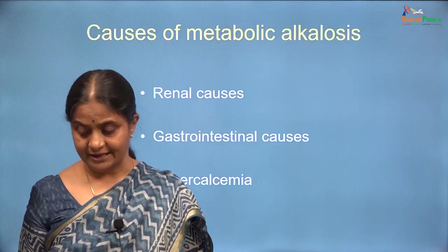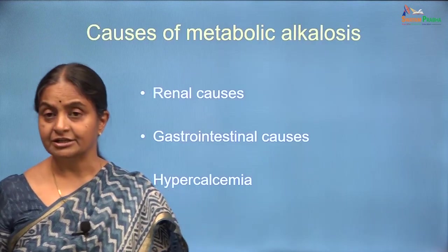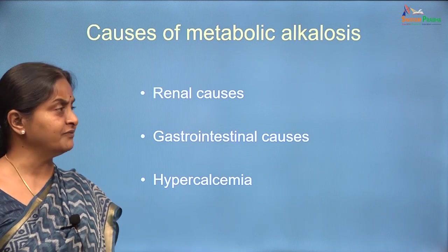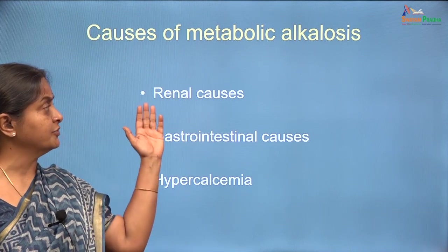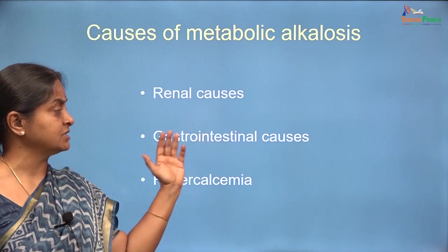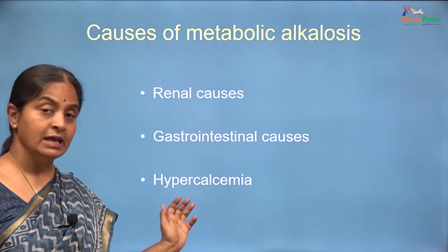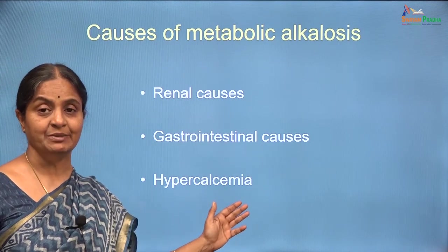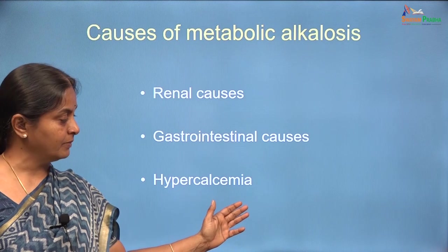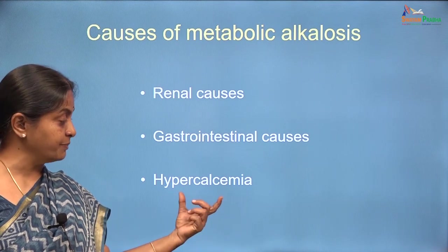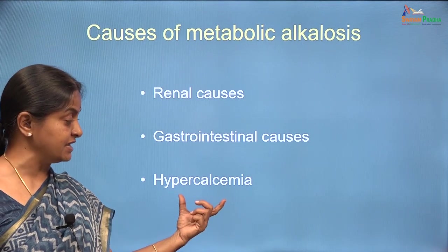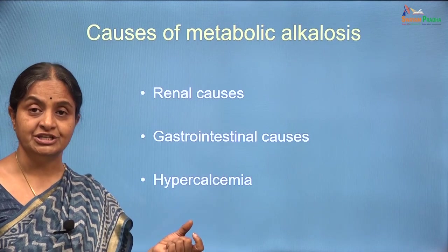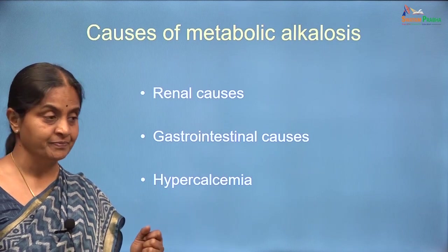It is good to classify conditions which lead to metabolic alkalosis. A convenient classification could be renal causes, gastrointestinal causes, and — listed separately — hypercalcemia. We will see that in the hypercalcemic state it is again distal tubular generation that has gone up.